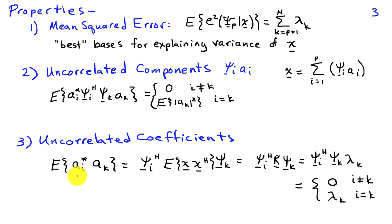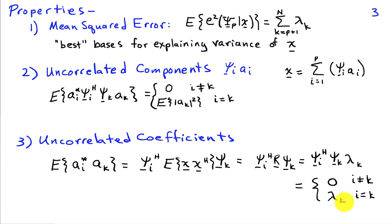The average value of a_i* times a_k becomes psi_i^H R psi_k. Because R psi_k = lambda_k psi_k, substituting the eigenrelationship and using the orthogonality of psi_i and psi_k means this is 0 unless i = k, in which case it equals lambda_k. So we have the best basis for explaining the variance of signal x, minimizing the mean squared error which equals the sum of eigenvalues excluded from the principal component representation, with all components and coefficients uncorrelated.